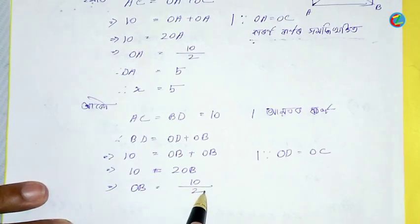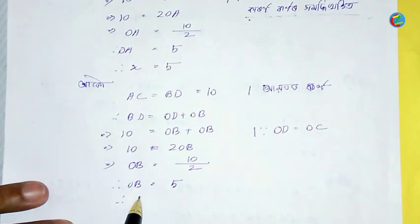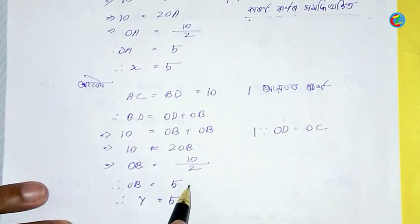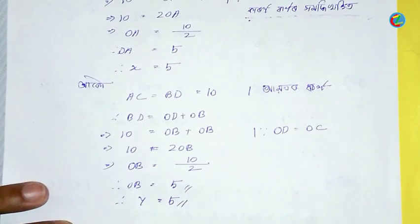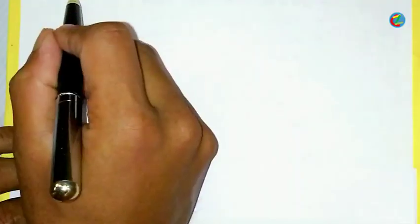BD is equal to OB. This is the second step — the left side and the left side. This is the fifth step. This is the sixth step; the right side is 6. This is the same step.